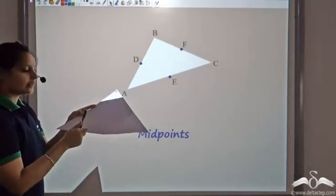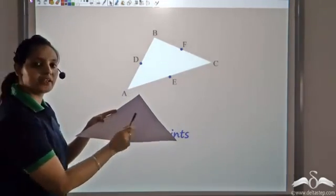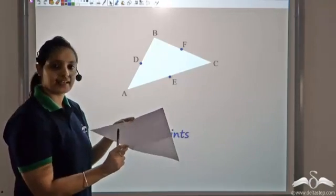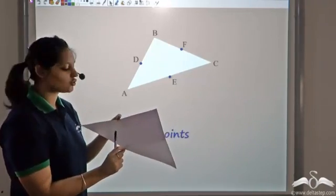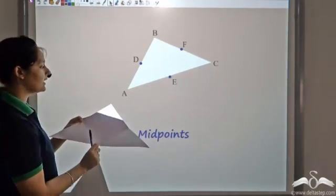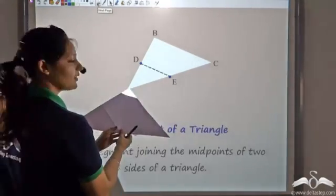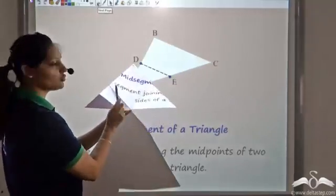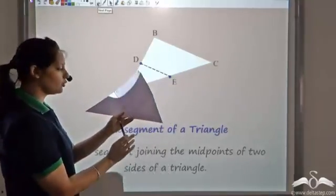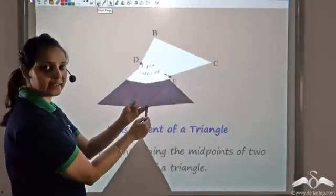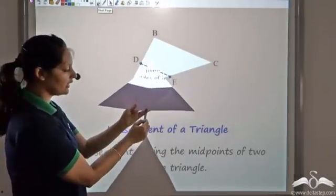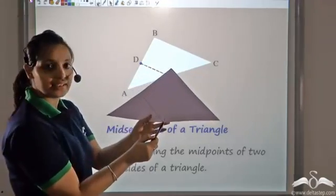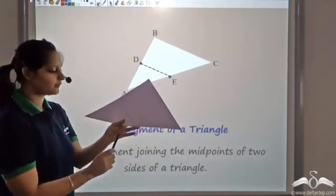Now if I join any two of these midpoints, what I get is a line segment called a midsegment. A midsegment is a line that joins any two midpoints. So I join D and E — this line DE is the midsegment.